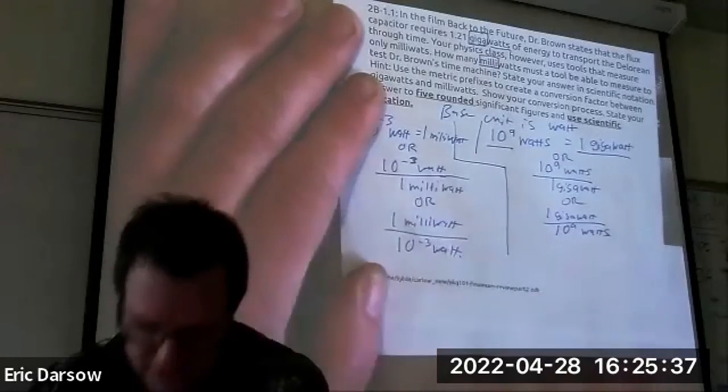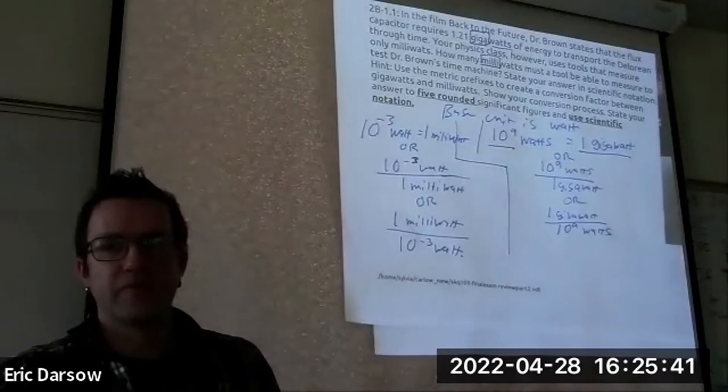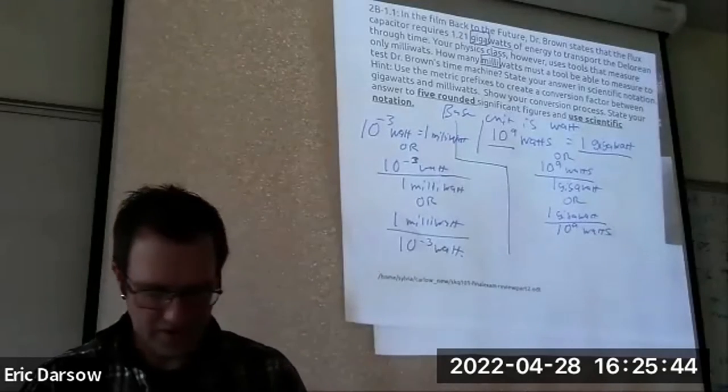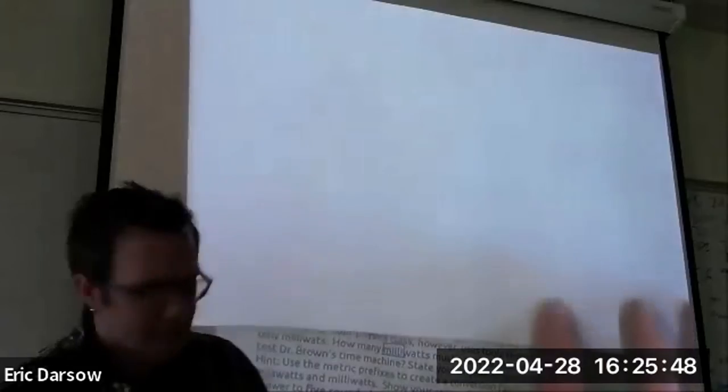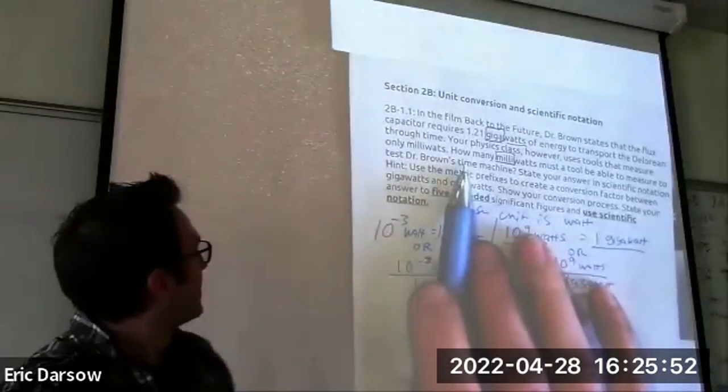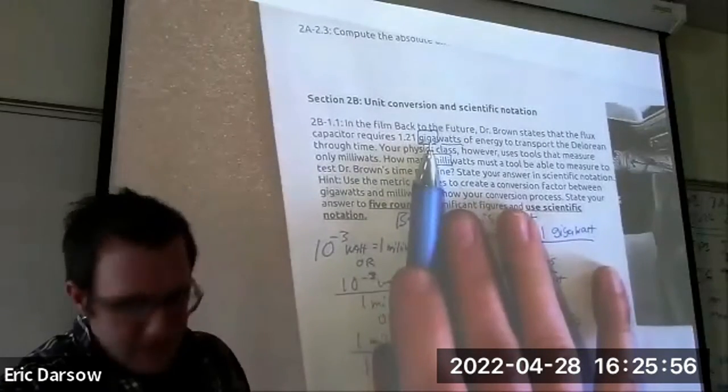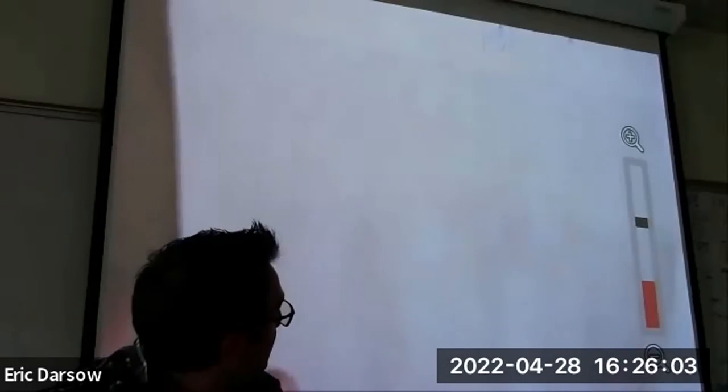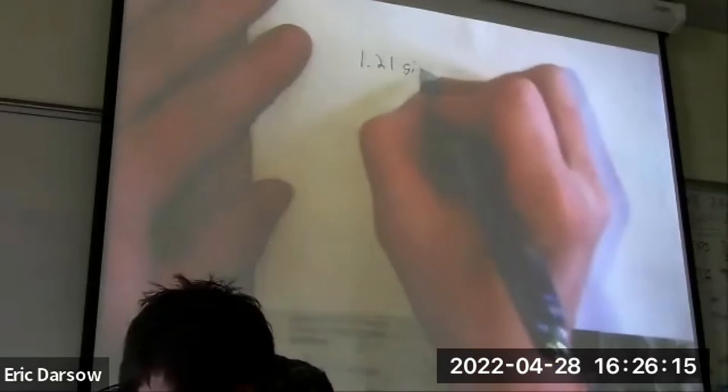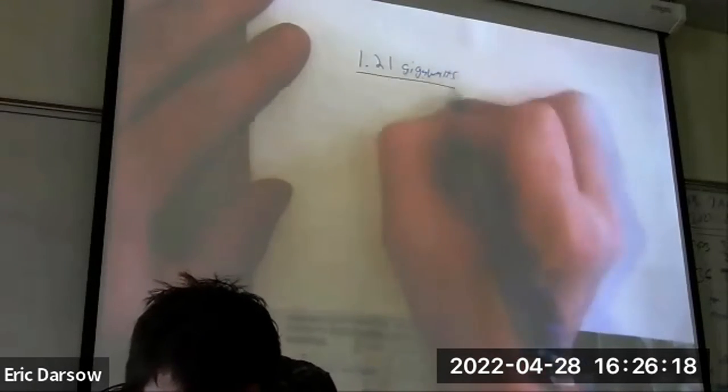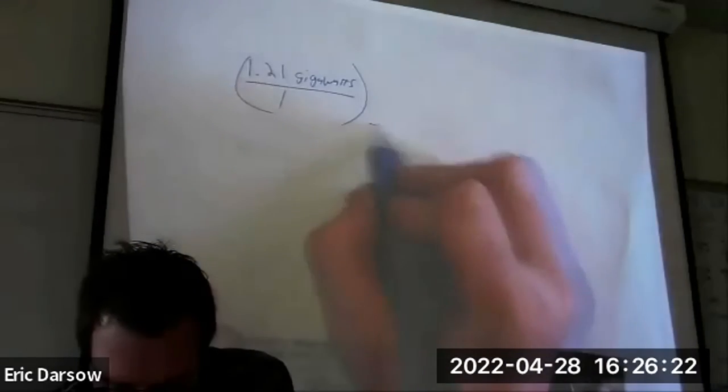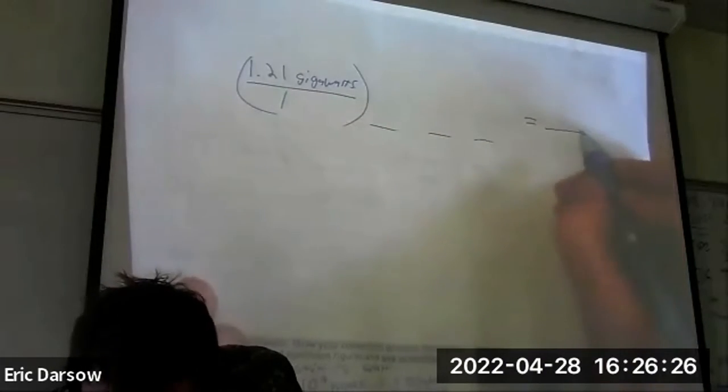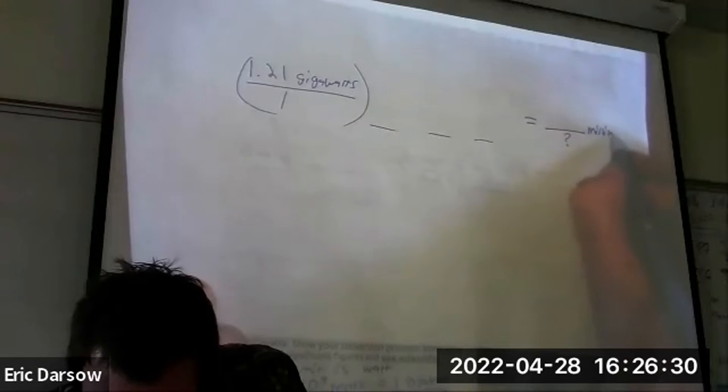We're almost done, this is the last stretch, the home stretch. Now we got to solve the problem. Figure out what the question wants. It gave us gigawatts, it wants milliwatts. So set up your work, give yourself some room to breathe. Get another sheet of paper. We're going to start with what we're given: 1.21 gigawatts. Put it over one to keep yourself organized.